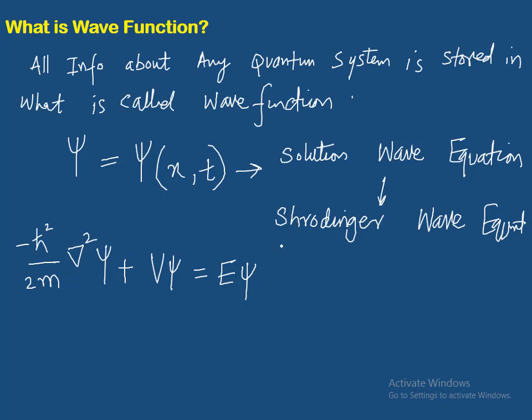Ye basically time-independent version hai, jise TISE kehte hain — T for time, I for independent, S for Schrödinger, E for equation. This is the time-independent Schrödinger equation.